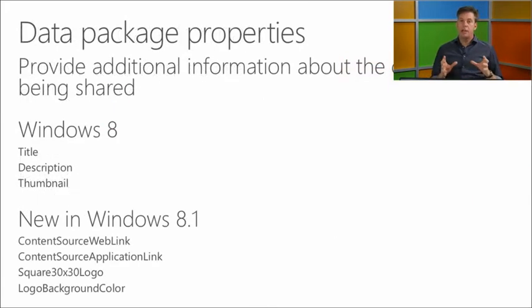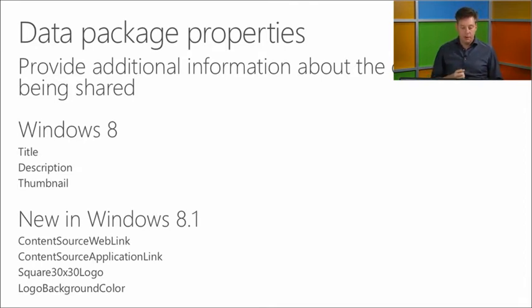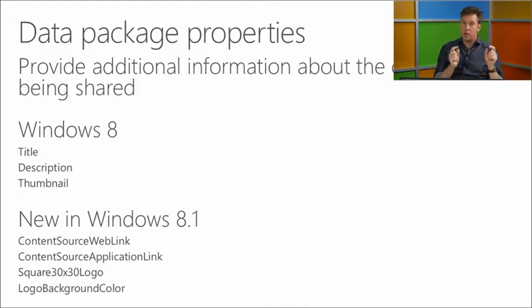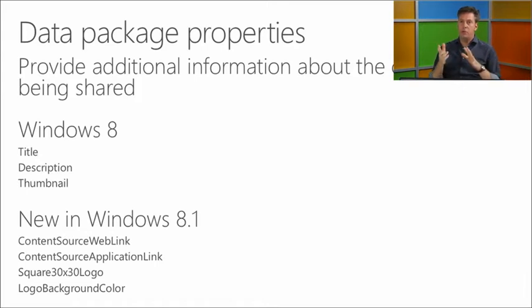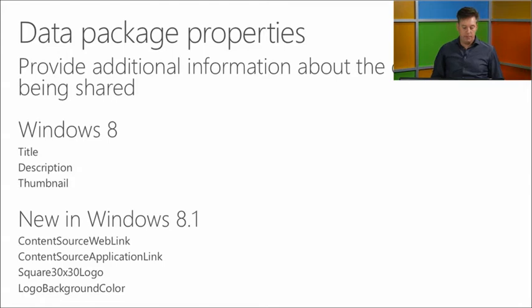In the data package provided through the share contract there are some extra properties. Already in Windows 8 you could provide a title, description, and thumbnail. New in Windows 8.1 are changes to the links you can provide — in Windows 8 you could provide one link, but in Windows 8.1 you can provide both an application link and a web link. You can also provide a logo or logo background color, which is what we saw when sharing from MSN to the reading list app — the logo of IE or MSN was provided by IE through the sharing contract.